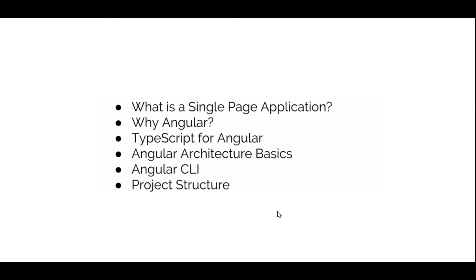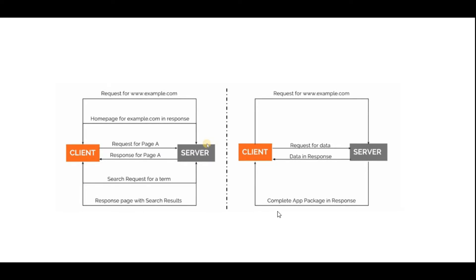In this tutorial I'll be talking about what is a single page application. Basically, in the traditional architecture, on the client side we are using HTML and on the server side we are using PHP or any other language like C# or something like that. The client requests page A from the server and the server responds with just page A. Each time, the client communicates with the server — for example, requesting www.example.com and the server responds back with the home page.